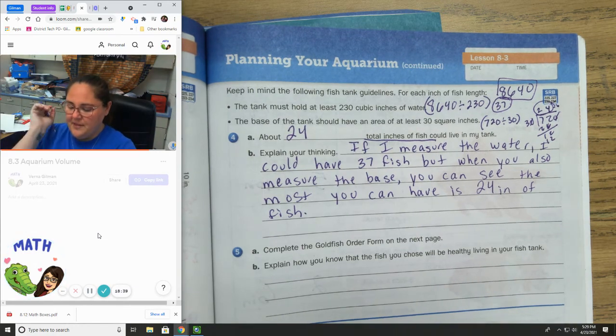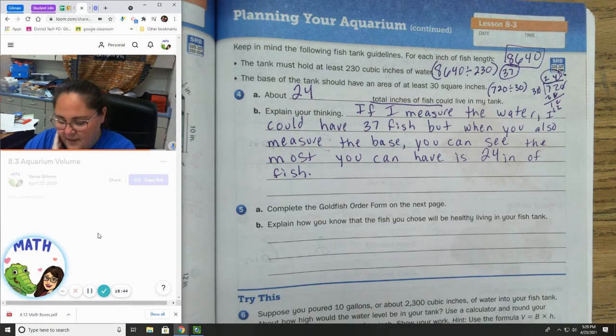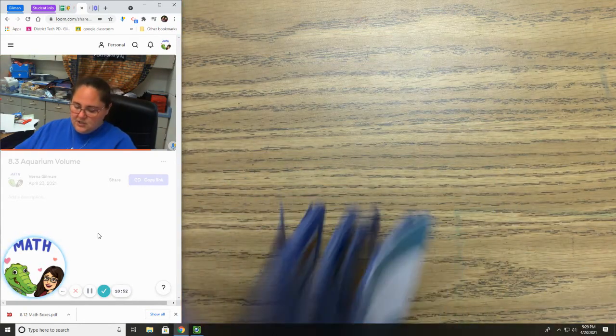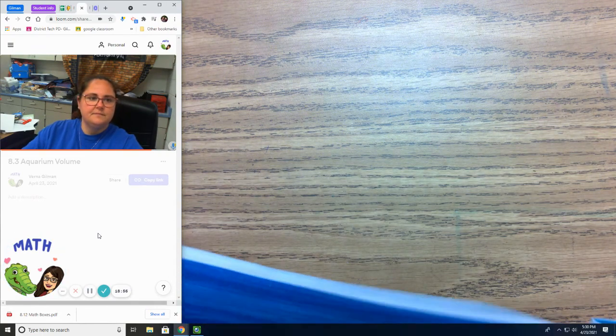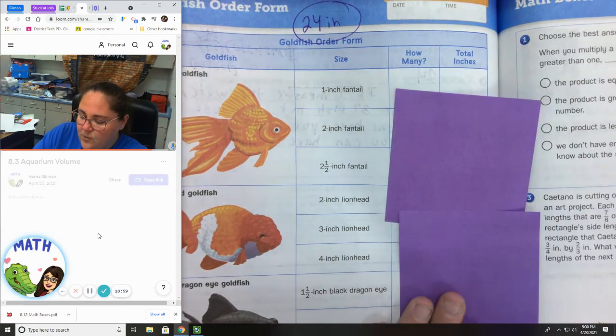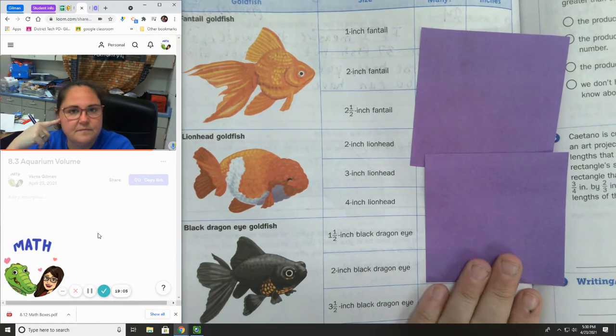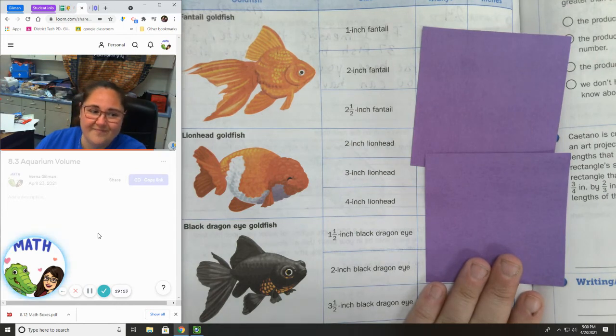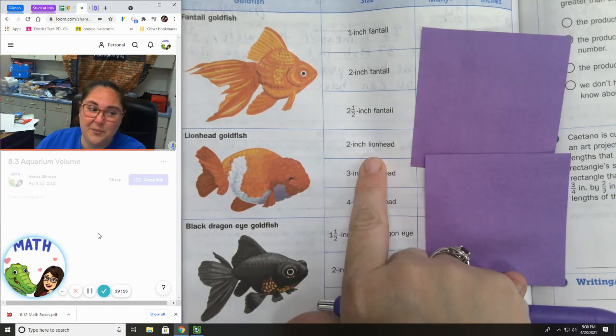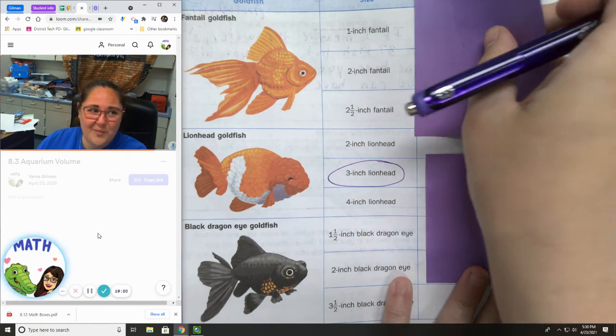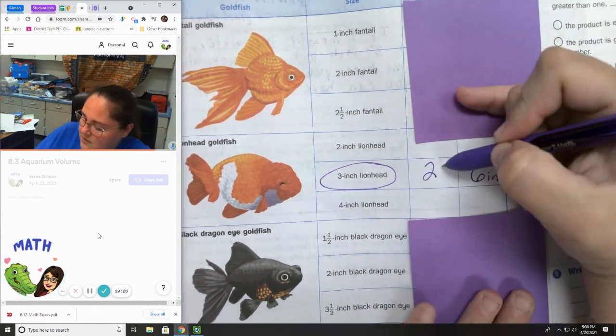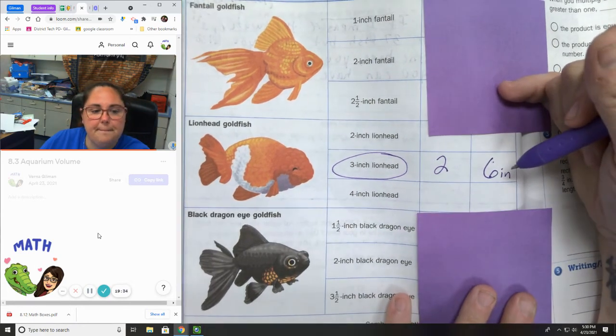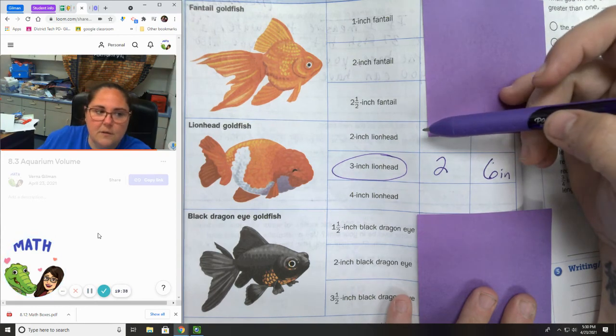It says complete a goldfish order form on the next page. Explain how you know what fish you will choose to be healthy living in the fish tank. So we're going to go to the next page. Remember, the most we can have is 24 inches. So on page 286, let's look at what we got. I can have 24 inches total. Can't have more than that. Now, I really think this lion head goldfish, this one right here looks really cool. And you know what? I don't want just a two inch one. I want a three inch one. And maybe I want two of those because I think they're really cool. I'm going to order two of those.